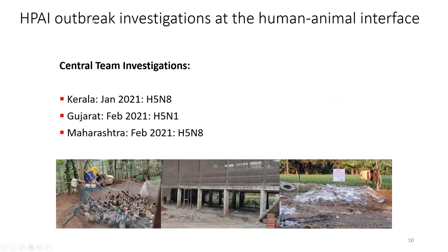In India, in recent times, avian influenza outbreaks have been detected at the animal-human interface in states like Kerala, Gujarat, and Maharashtra. At two instances in 2021, it was an H5N8 outbreak, and in Gujarat an H5N1 outbreak was also found. The point is that it is very important to maintain a watch on these emerging viruses through robust surveillance, so that we are not caught unaware as we were in COVID-19. Influenza viruses have the potential to mutate very fast and cause massive outbreaks.